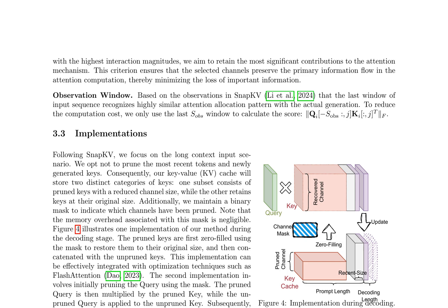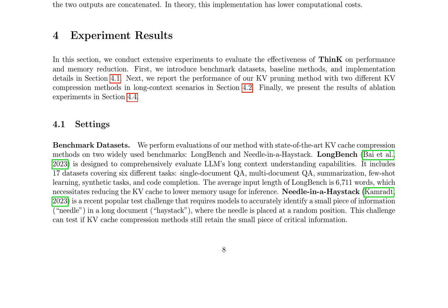The authors propose two implementations: one involves zero-filling pruned keys using a mask to restore them to their original size, and the other involves initially pruning the query using the mask, which has lower computational costs. The paper presents results of extensive experiments evaluating the effectiveness of THINK on performance and memory reduction, using benchmark datasets such as LongBench and Needle in a Haystack, comparing the proposed method with state-of-the-art KV cache compression methods. The results show that THINK effectively reduces memory usage while maintaining performance in long-context scenarios.